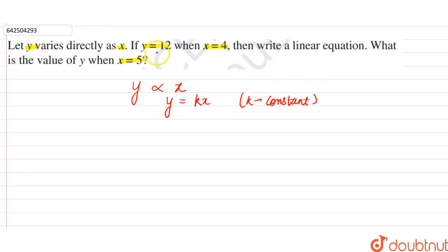So in the question it is given that y is equal to 12 and x is equal to 4. So let's put the value of y and x to find the value of k. So 12 is equal to k times 4. So k will be equal to 12 divided by 4 which is equal to 3. So the value of k will be equal to 3.